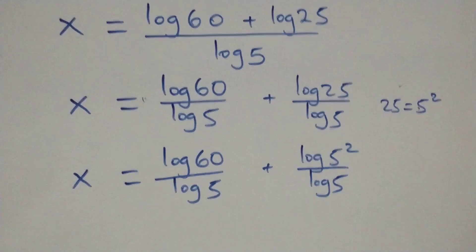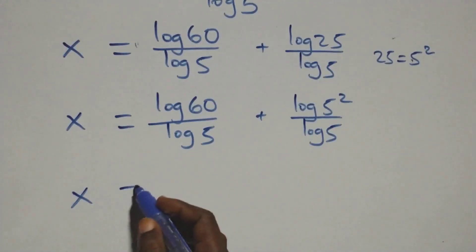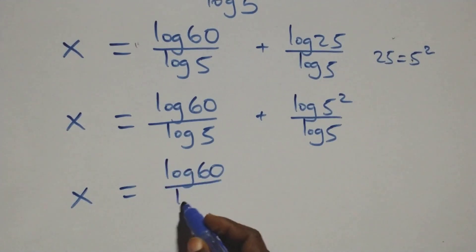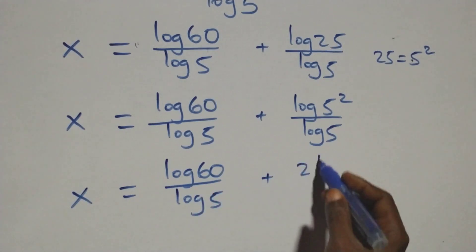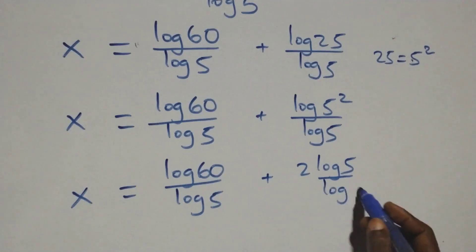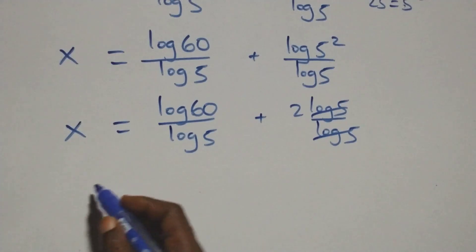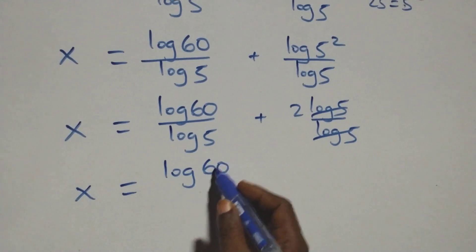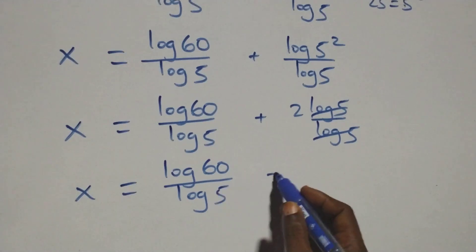We apply the power rule of logarithms. Since 25 is 5 squared, log 25 becomes 2 log 5. So we have x equals log 60 over log 5 plus 2 log 5 over log 5. Then log 5 cancels, and this becomes x equals log 60 over log 5 plus 2.